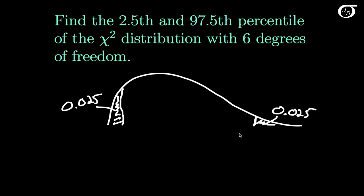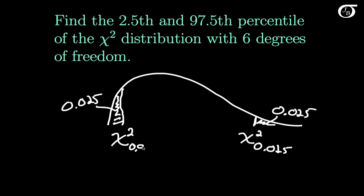In my notation, we call this value chi-square 0.025 — the chi-square value with 0.025 off to the right. This value over here we call chi-square 0.975, because it has an area of 0.975 off to the right.